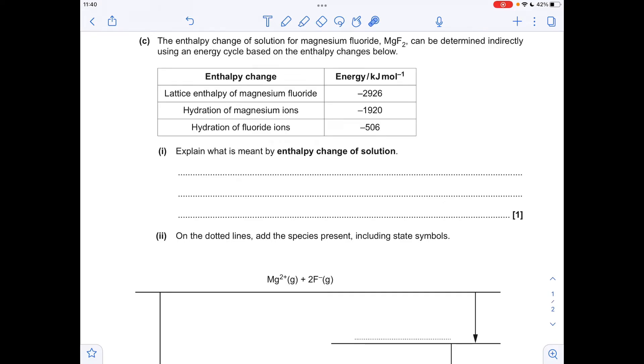So the question starts out with the definition. What's meant by enthalpy change of solution? That's the enthalpy change when one mole of a solid or solute is dissolved. It's always a good idea if you can to back up what you're saying with an equation. So in the case of magnesium fluoride, you've got one mole of MgF2 solid going to a mole of Mg2+ aqueous ions and two moles of F- aqueous ions.